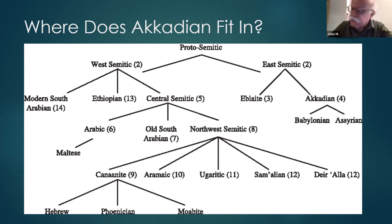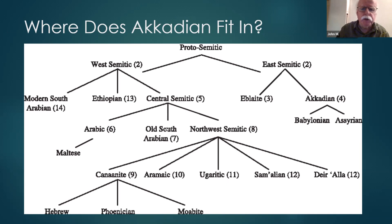For example, Arabic, which is assigned to Central Semitic, is a group of three language families: Arabic, Old South Arabian — an inscriptional language from the Yemeni area in the south of the Arabian Peninsula — and Northwest Semitic.